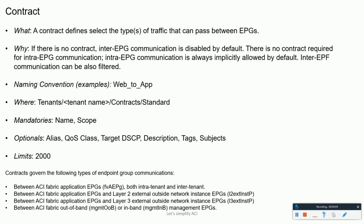Contracts — in addition to EPGs, contracts are key objects in the policy model. EPGs can only communicate with each other according to contract rules. An administrator uses a contract to select the type of traffic that can pass between EPGs, including the protocols and ports. If there is no contract, inter-EPG communication is disabled by default. No contract is required for intra-EPG communication — intra-EPG communication is always implicitly allowed. If two hosts are in the same EPG, they can talk freely; but if a machine in one EPG tries to reach a machine in a different EPG, a contract is required.